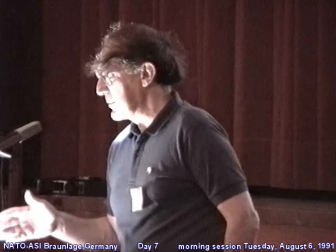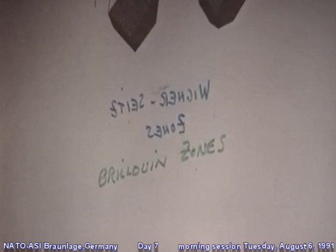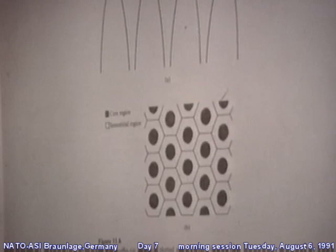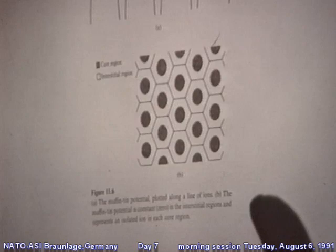Even though you have this huge array of particles, you really only have to solve the problem in one of these regions. The first principles calculations, as far as certain properties of solids, have been incredibly successful — for example, electronic structure and transport properties. The main problem has involved calculating energetics. It's only recently that these calculations would tell you which had the lowest energy structure for metals — BCC, FCC, or HCP. But now techniques have improved sufficiently to deal with that problem.